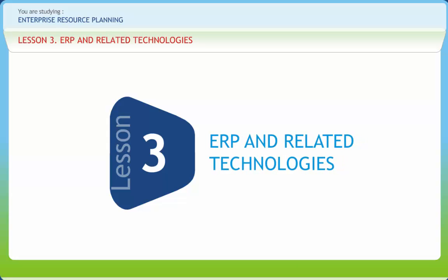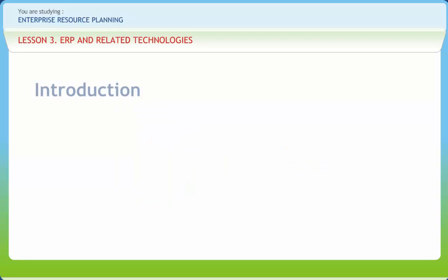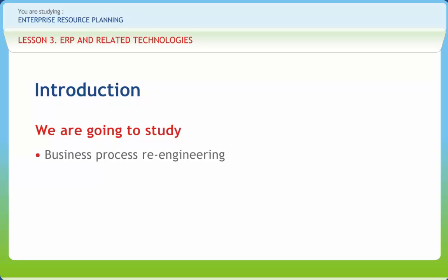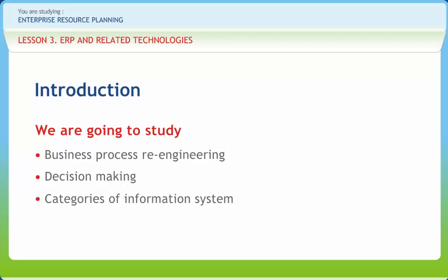ERP and related technologies. We all know the data in the ERP application is not integrated with other enterprise or division systems and does not include external intelligence. In this lesson, we will study business process re-engineering, decision making, categories of information systems, and online analytical processing.